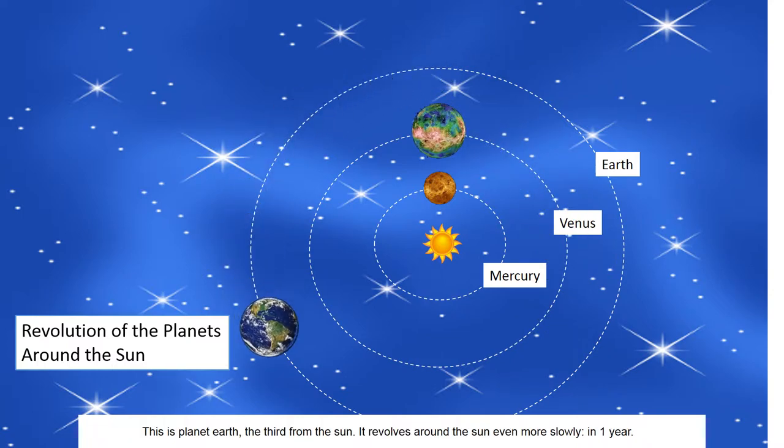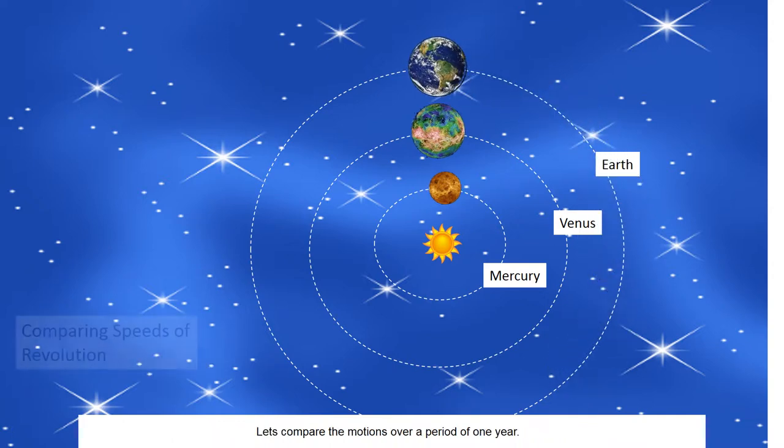This is planet Earth, the third from the Sun. It revolves around the Sun even more slowly in one year. Let's compare the motions over a period of one year.